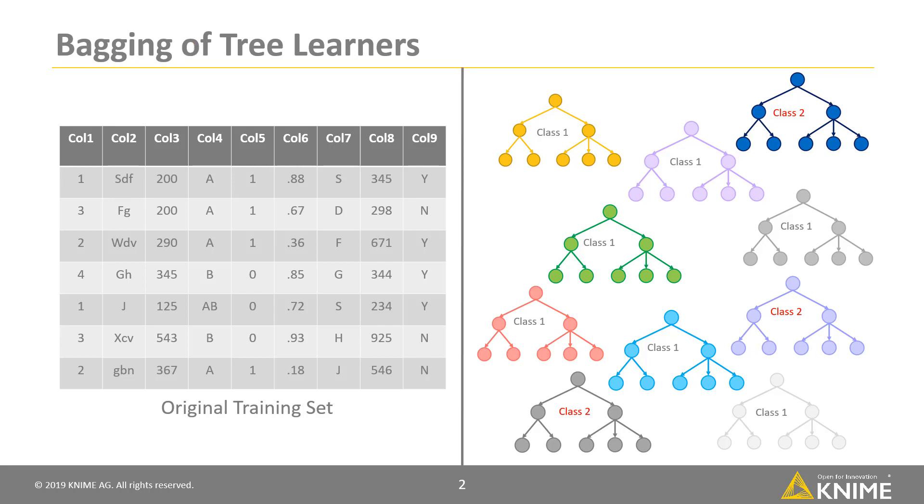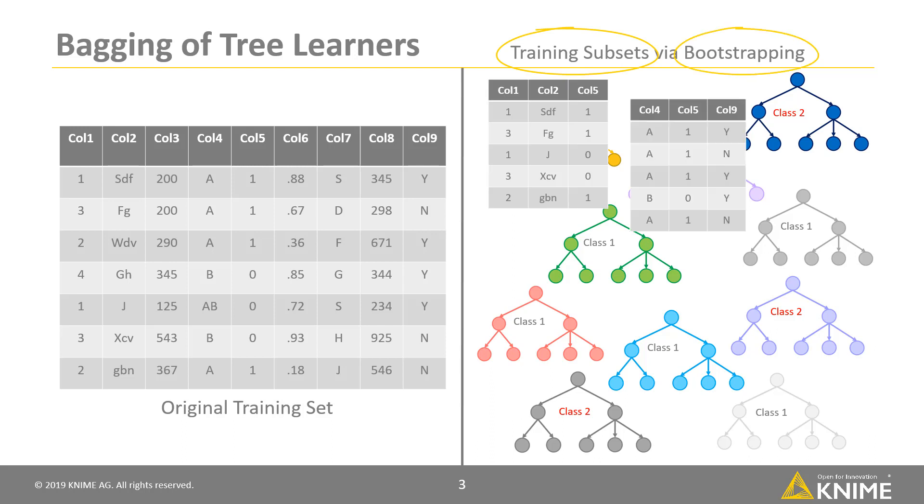One decision tree would be trained on the whole training set. In a random forest, n decision trees are trained each one on a subset of the original training set obtained via bootstrapping, that is, via random sampling with replacement of the original data.